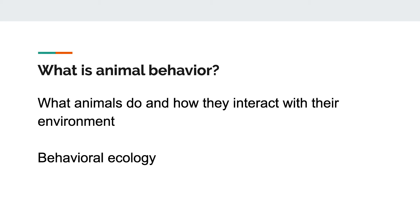Before we get too far along in today's lesson, let's talk about what animal behavior is. Animal behavior is what animals do or how they interact with their environment. A scientist who studies animal behavior is called a behavioral ecologist. They do experiments and observe animal behavior to understand what they do and why they're doing it.